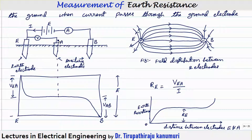If more variation is there in the three readings, it means the distance between electrodes E and B is not sufficient to obtain the constant characteristic curve. In that case, we have to increase the gap between electrodes E and B, then set up the measurement again. You measure the value in the center, shift electrode A a little bit and measure, shift it the other side and measure. All three voltmeter readings should show nearly the same value.